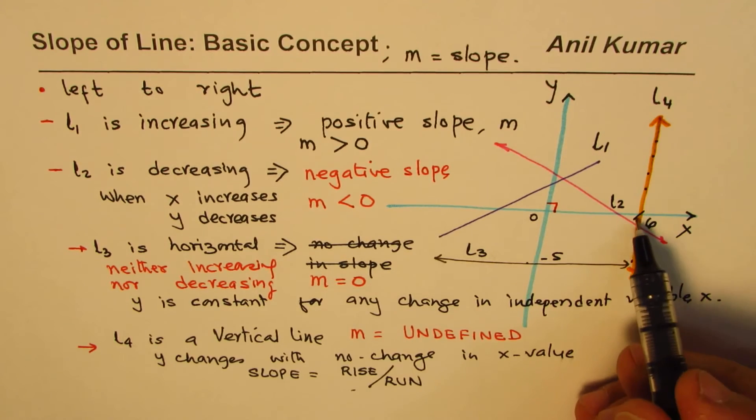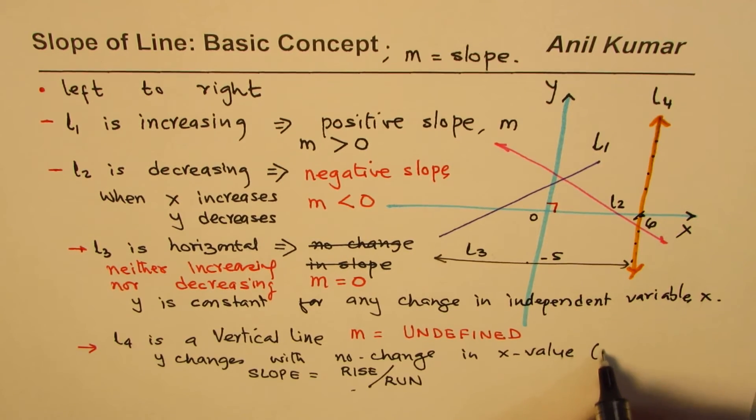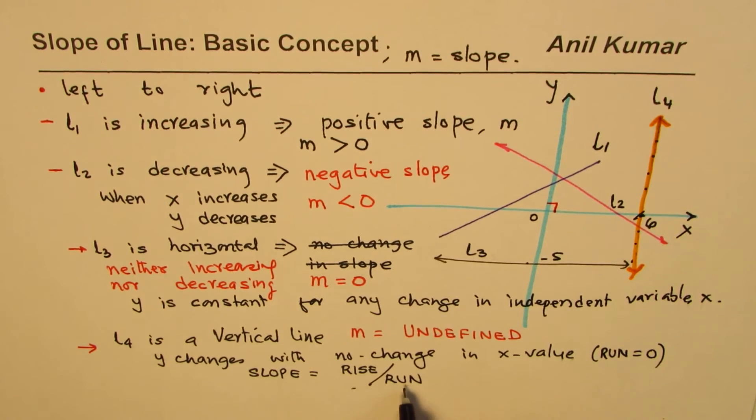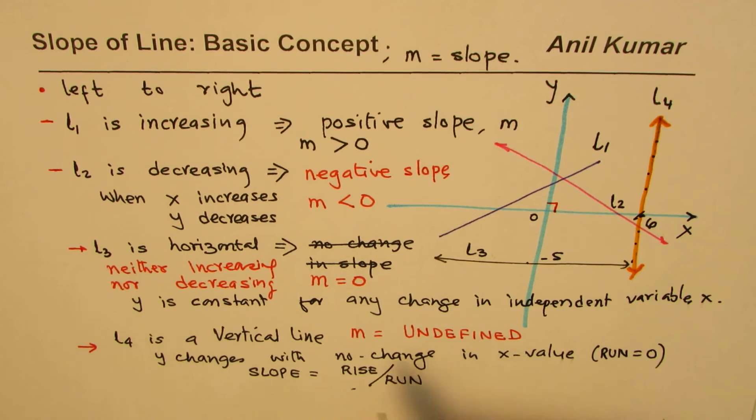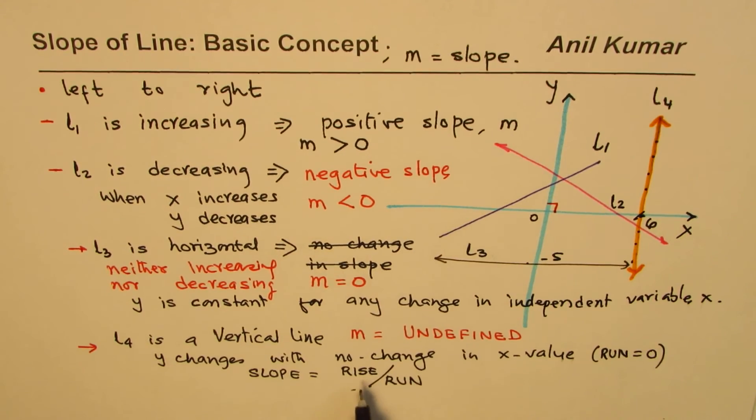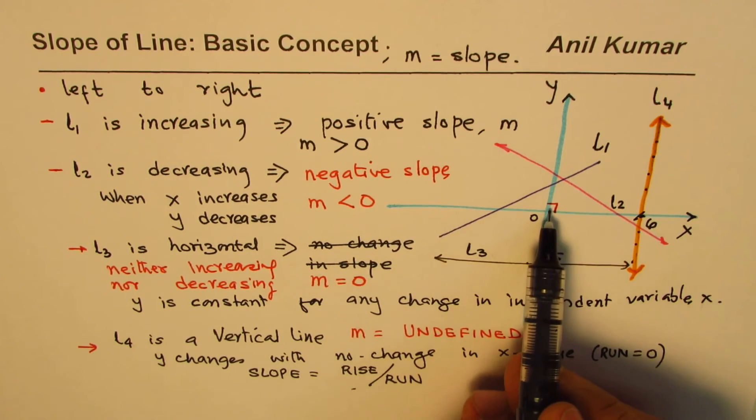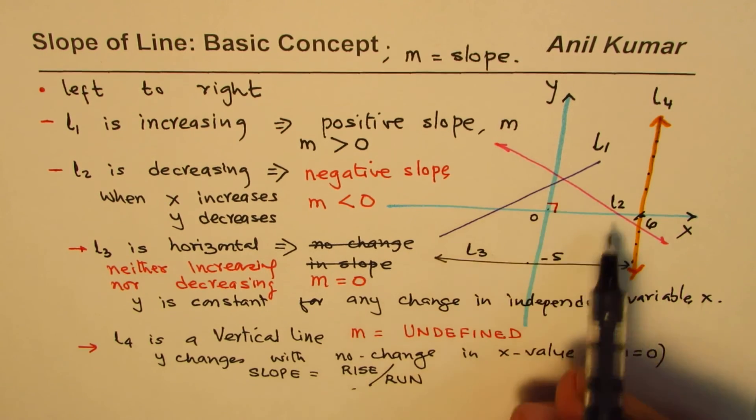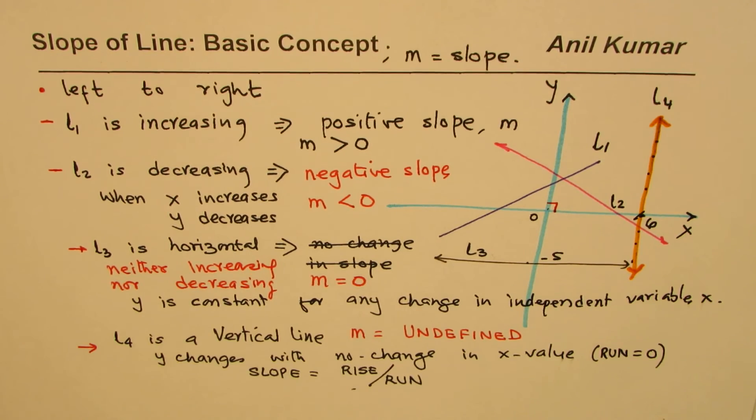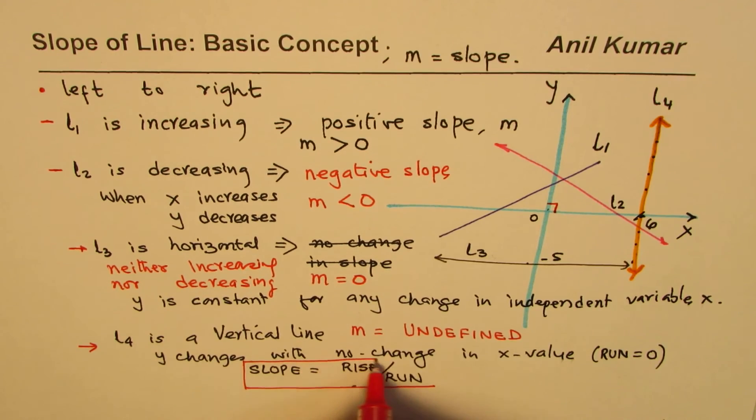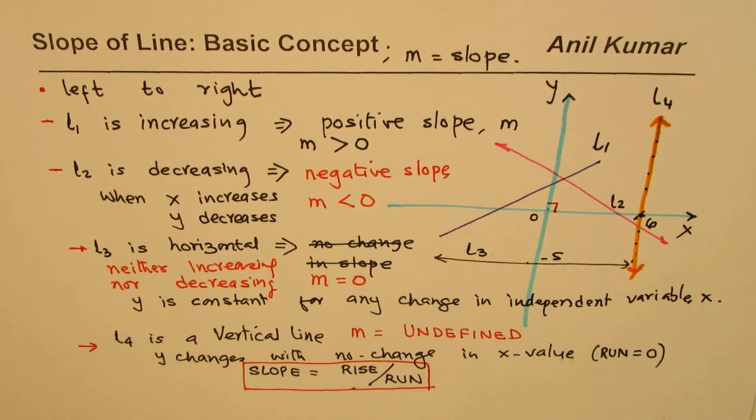And for this, run is 0. In this case, we have run as equal to 0. Anything divided by 0 is undefined. So that makes sense. Now if both rise and run are positive, then we get positive results. But if rise is negative, that means falling down, with a positive run, we get a negative result. So that is how we could connect rise over run with slope. We'll elaborate on rise over run in the next video.